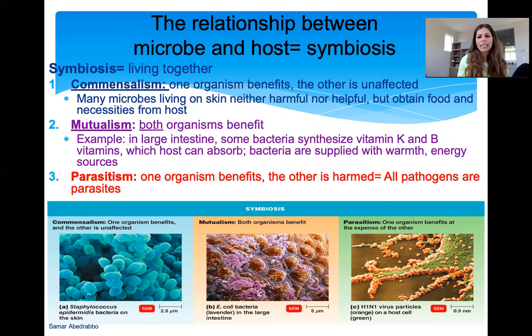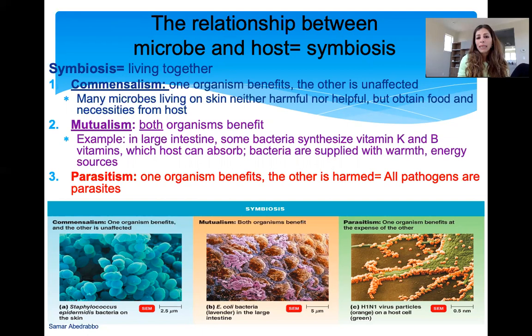In commensalism, we're not affected — that's the neutral part — but one organism benefits. In mutualism, both organisms benefit. An example is the bacteria in our large intestine as part of your normal flora. Some E. coli species make different vitamins for us, which are important in digestion. We get the vitamins, and the bacteria benefit because they have a place to live that's full of nutrients with the right temperature and oxygen — everything they need.